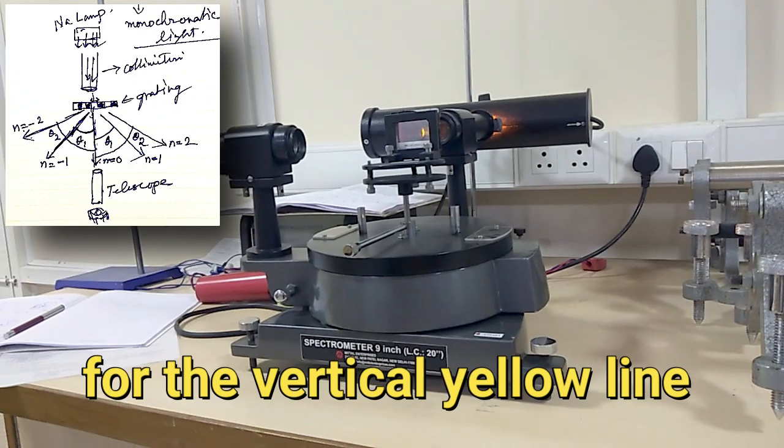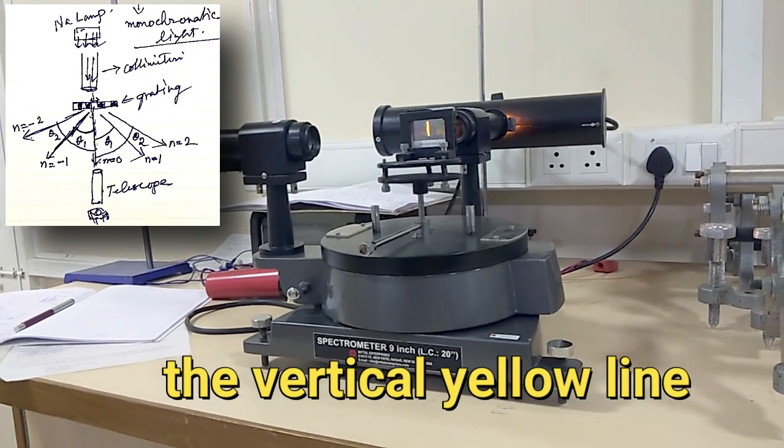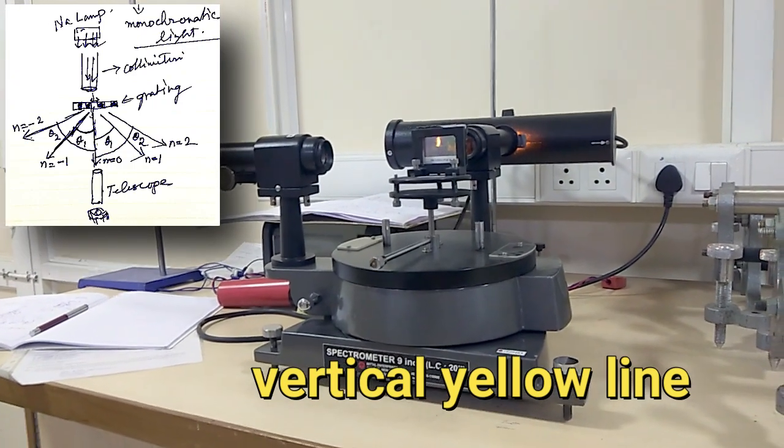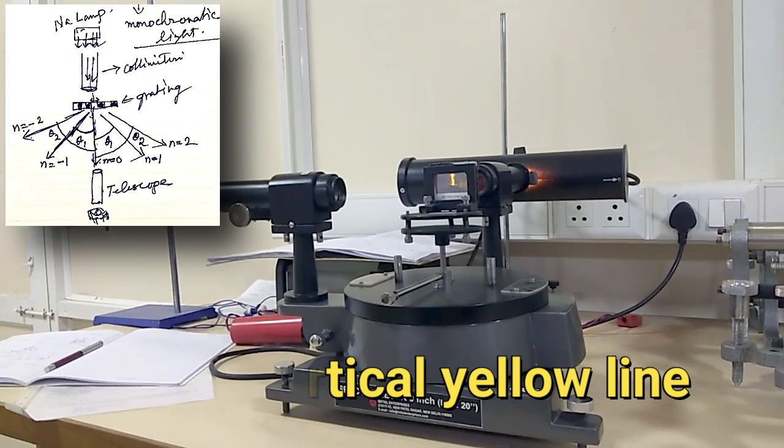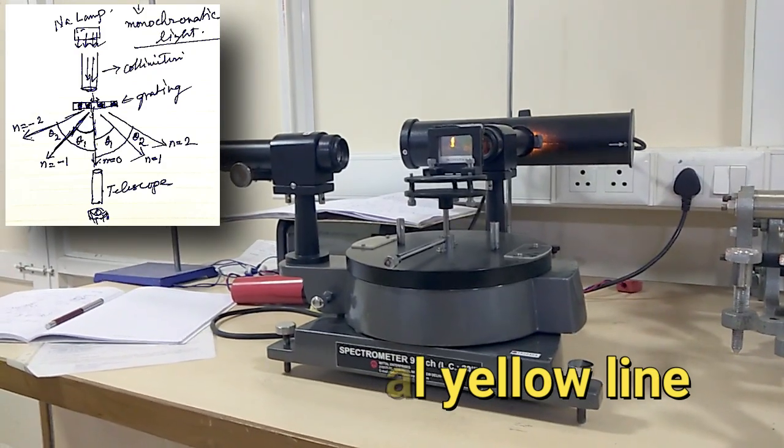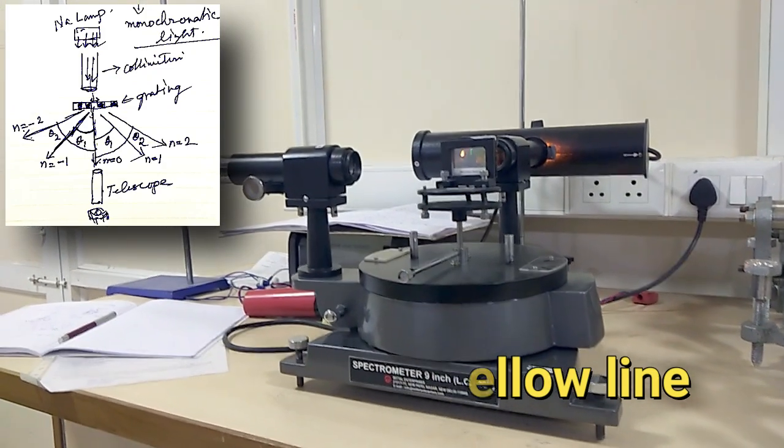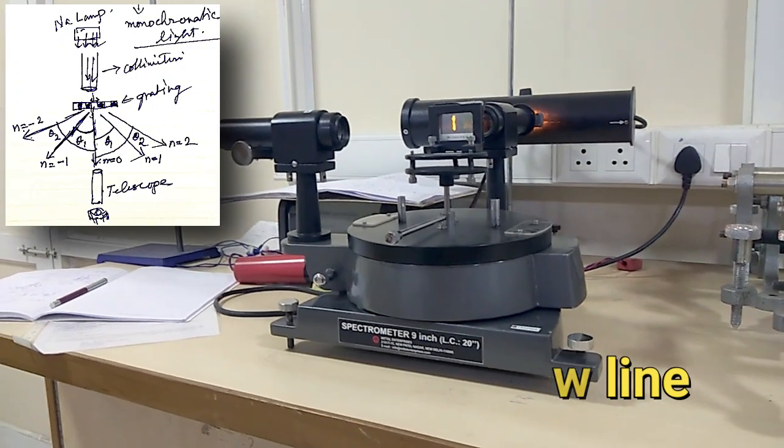You see how much far away from this main straight direction I am. So that is what I have to record, how much rotation I did from the straight line and that is your angle theta.